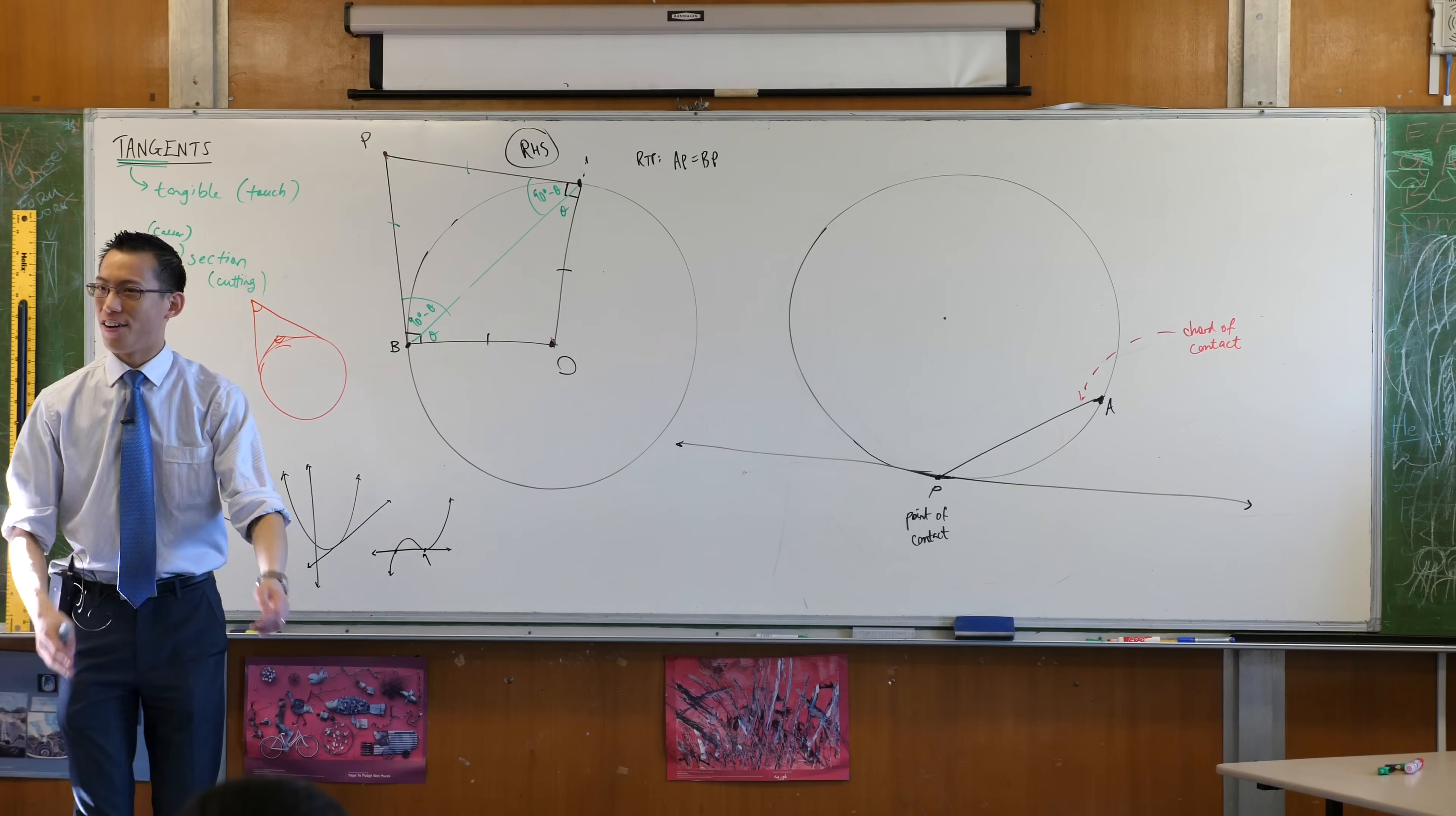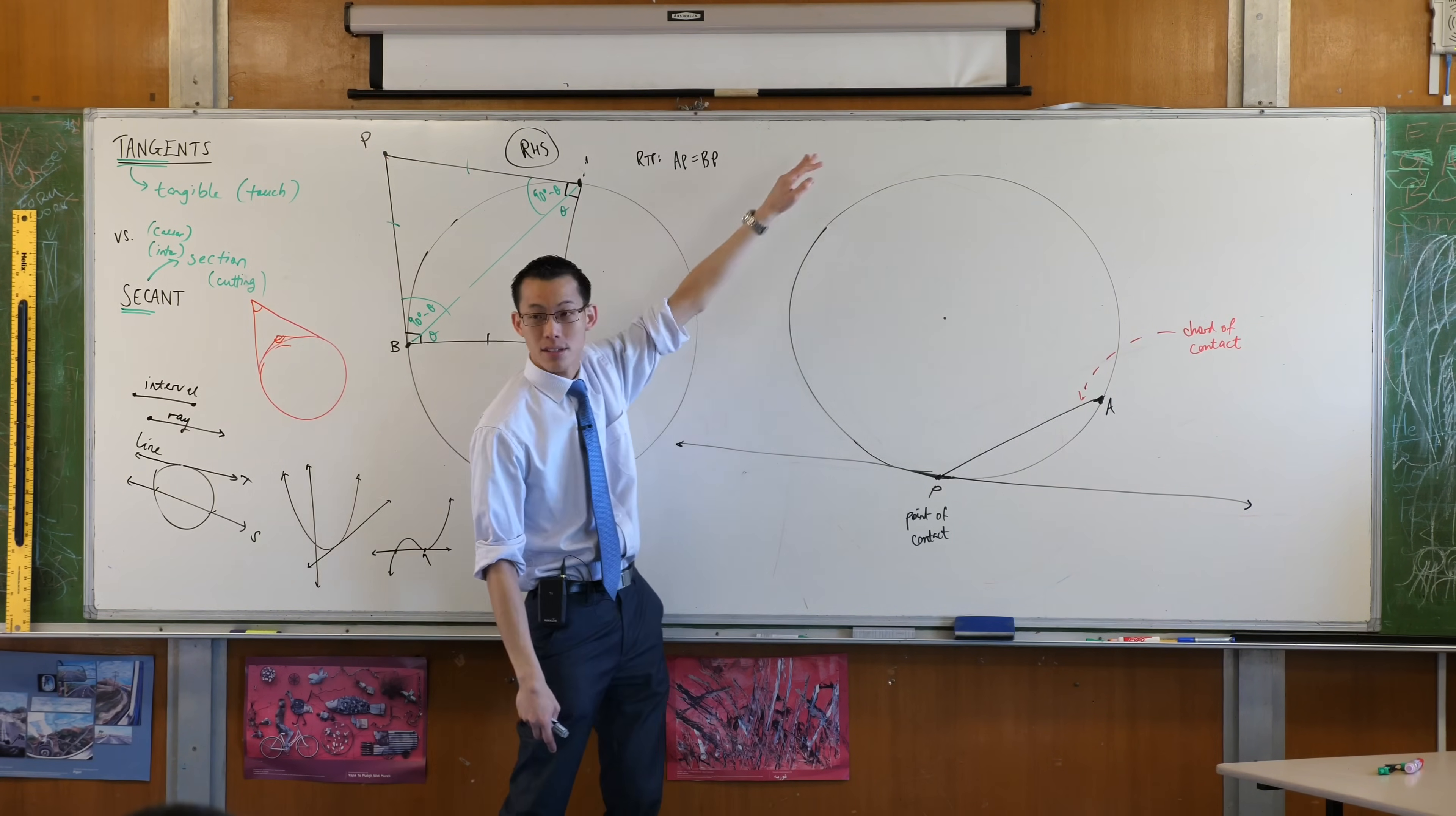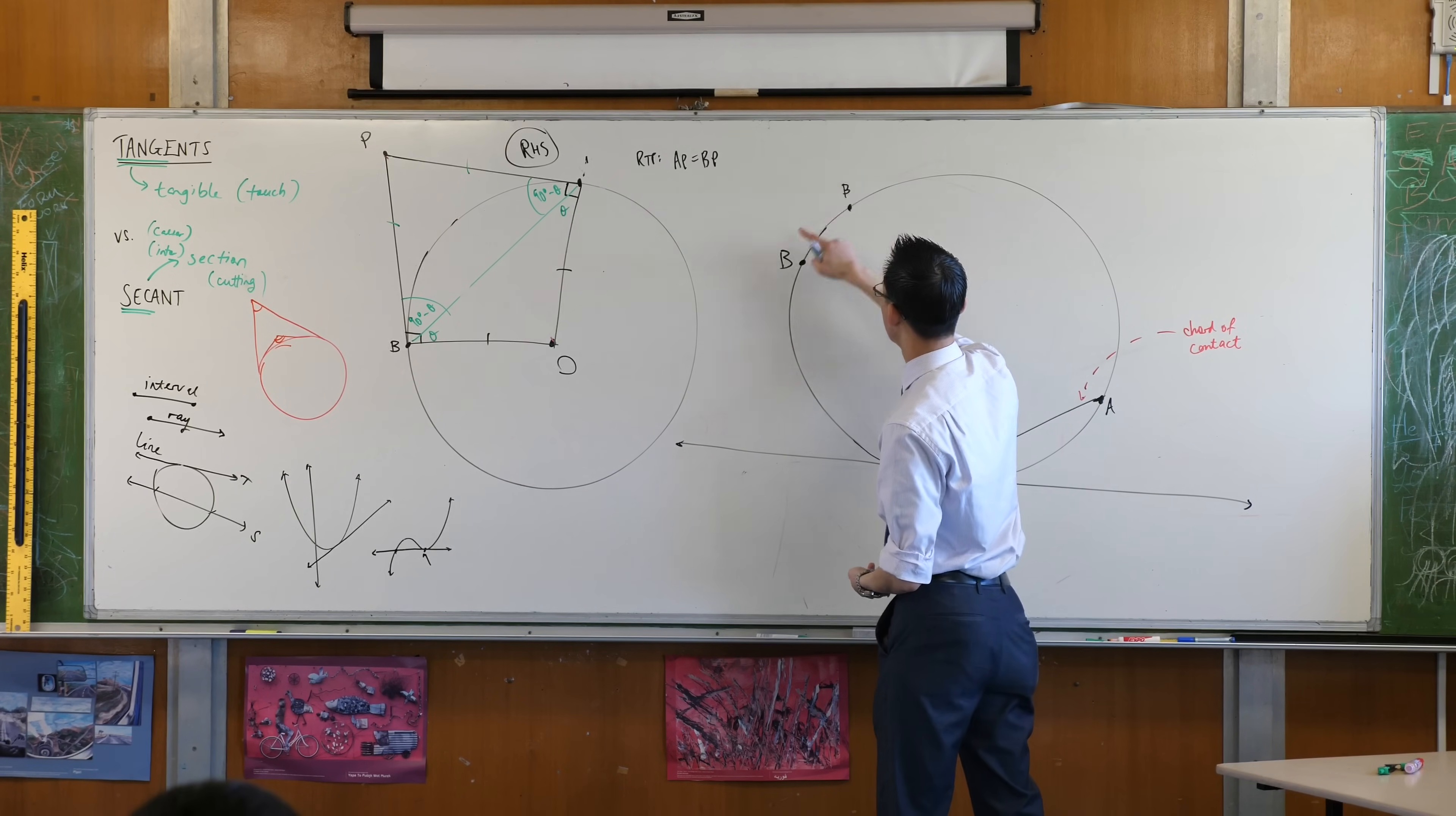Now the chord of contact AP, you can use it to form an angle on the circumference of the circle on the opposite side over here. So pick any point you like on the opposite side over here and join up and find a, you know, label it, call it B or whatever you want. Actually, I'm going to put my B somewhere else just to make it easier to illustrate what I'm about to show you.